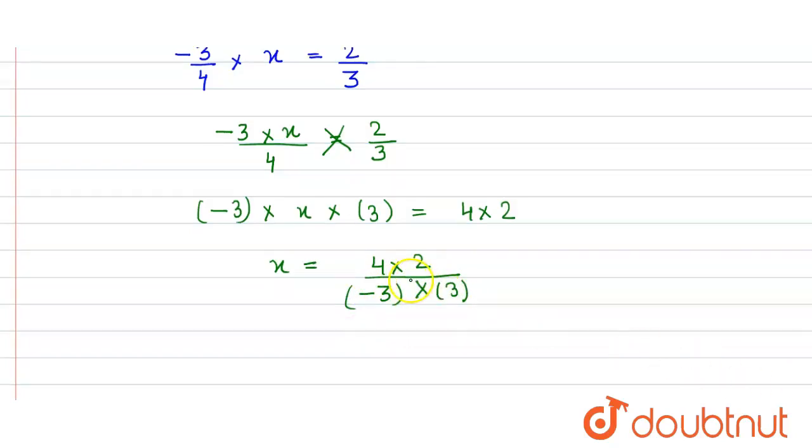Here nothing cancels out. So we just simply multiply the numbers in the numerator and multiply the numbers in the denominator.